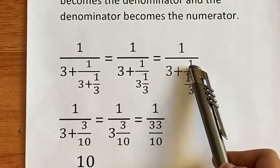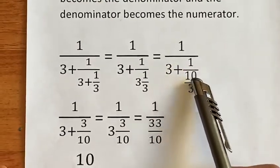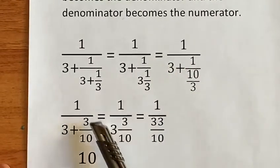Then, because we see there's a 1 on top, we flip this 10 over 3, making it 3 over 10.